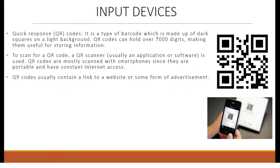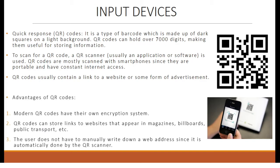Quick Response, or QR codes, are a type of barcode made up of dark squares on a light background. QR codes can hold over 7,000 digits, making them useful for storing information. To scan a QR code, a QR scanner — usually in the form of an application or software — is used. QR codes are mostly scanned with smartphones since they are portable and have constant internet access. They usually contain a link to a website or advertisement. Advantages include: modern QR codes have their own encryption system, and they can store links to websites appearing in magazines, billboards, and public transport, so the user does not have to manually write down the web address.